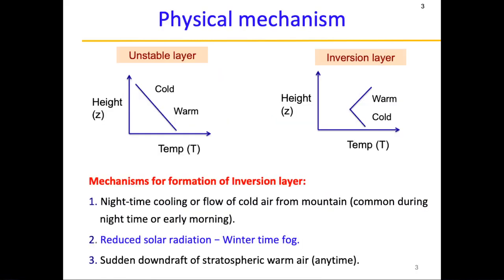So what is the physical mechanism? I consider two states. The first one is the unstable layer, which is what the atmosphere is usually in — a state where temperature as a function of height decreases as you move up in altitude. So you have warmer air on the bottom and colder air on the top.